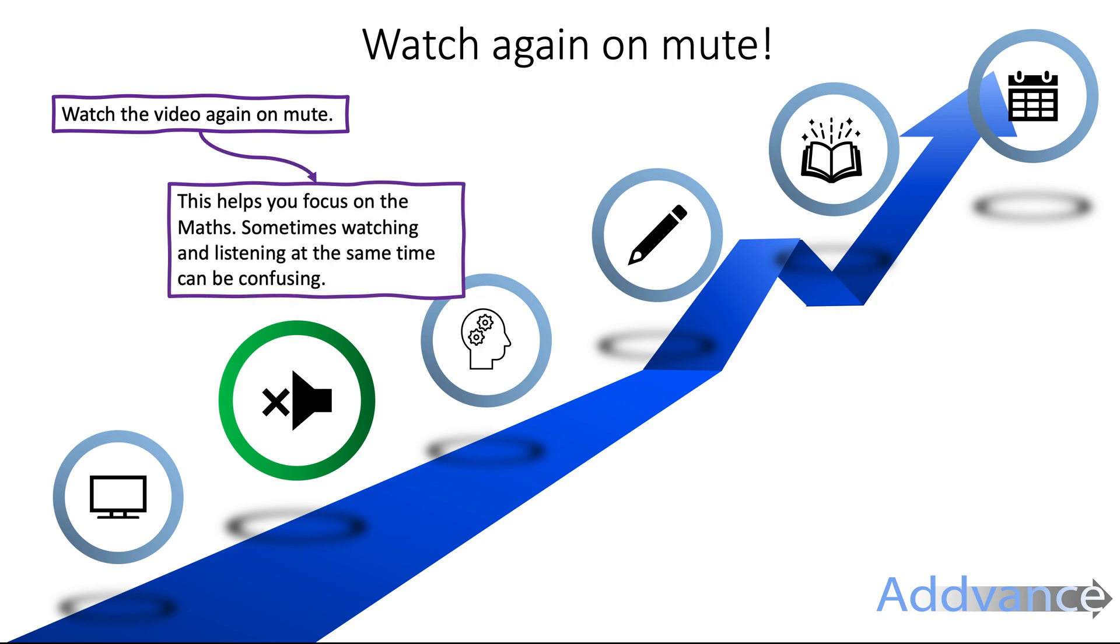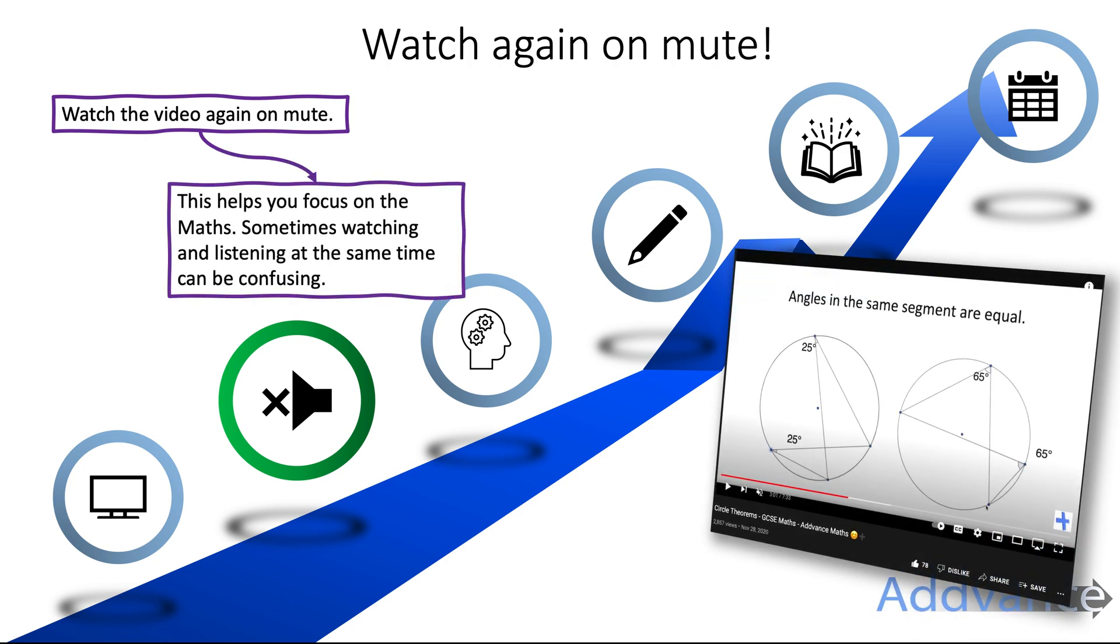Step two, once you've watched it once, watch it again but this time watch the video on mute. Turn the sound off and just focus on what is happening on the video without listening to the sounds. This can help you focus on the logic behind the maths because if you're watching and listening at the same time that can be a bit overwhelming and so sometimes it's a good idea to watch things on mute to help you understand. There's no pressure to do step two. If you feel like you've perfectly understood the video the first time then you can skip straight to step three but sometimes watching on mute can help.